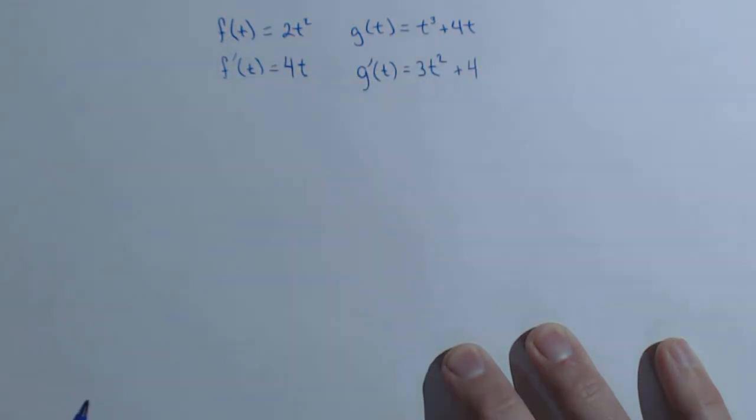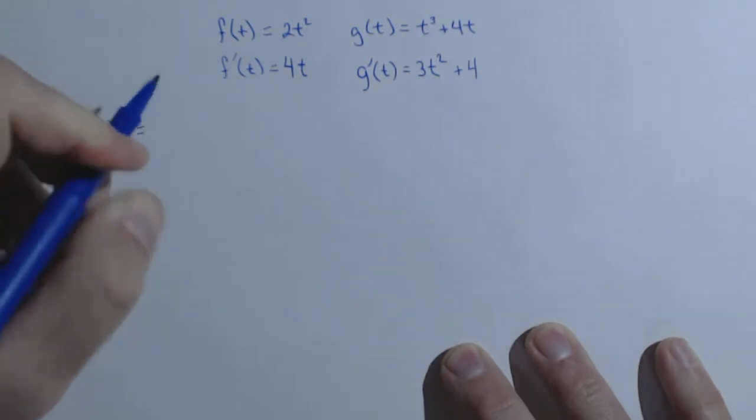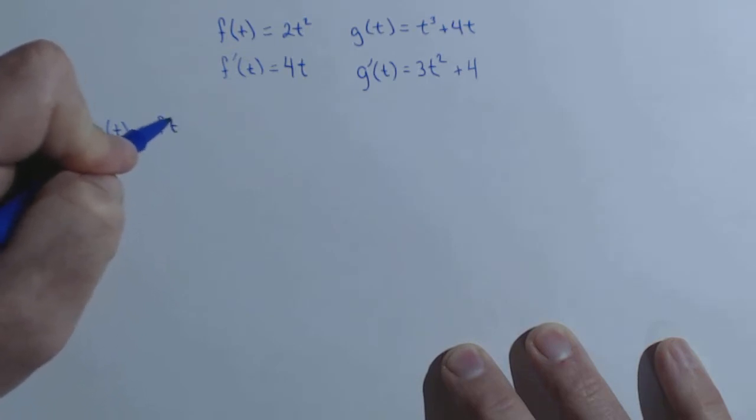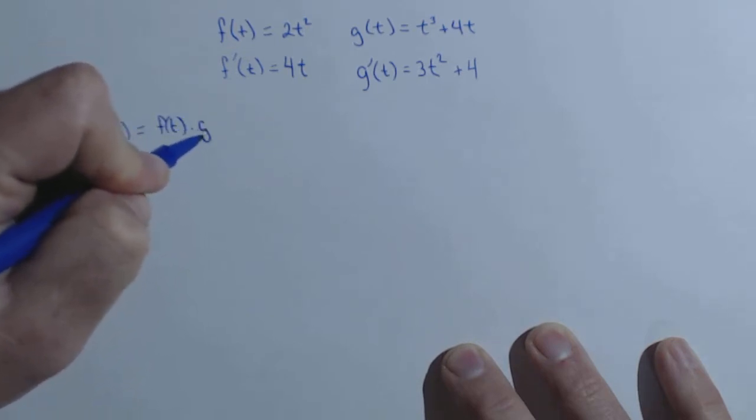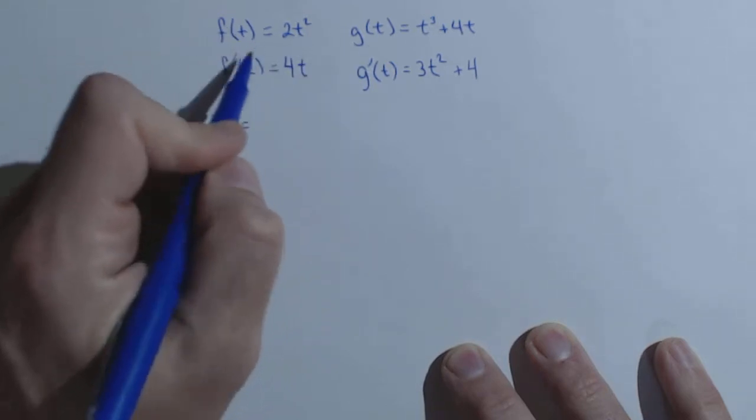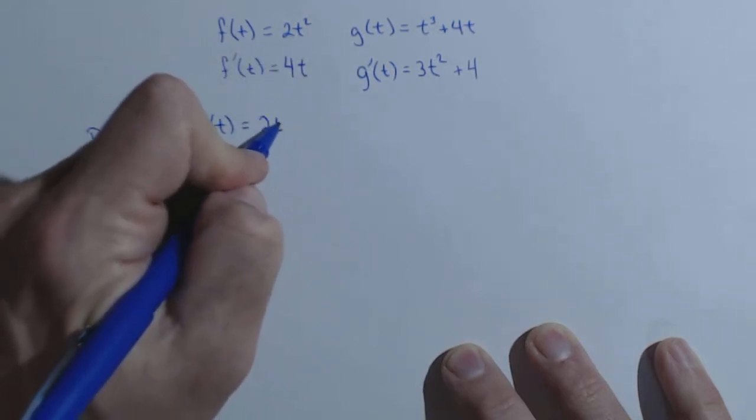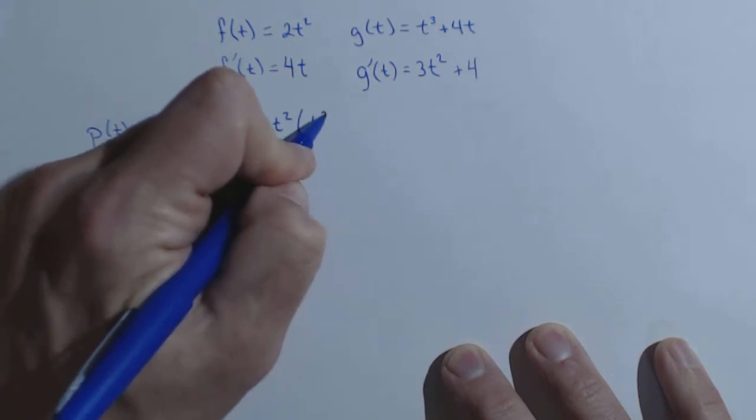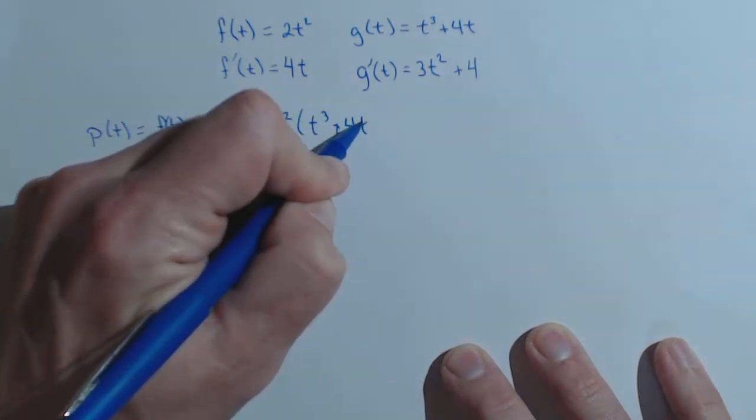Now what we're going to do is we're going to create a new function called p of t, which is f of t times g of t. So f of t times g of t is 2t squared times t cubed plus 4t.